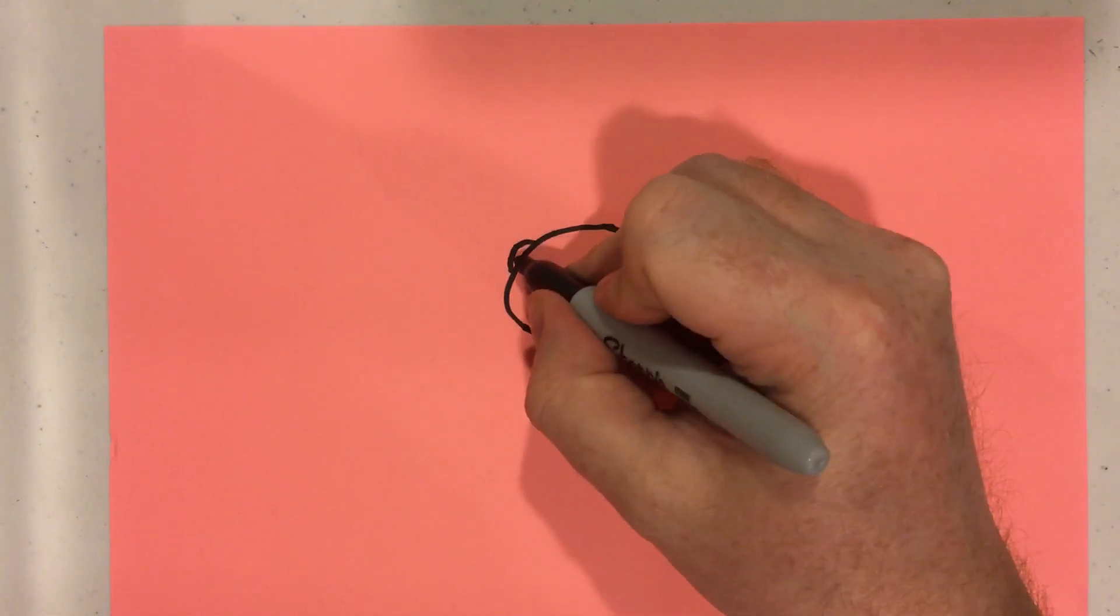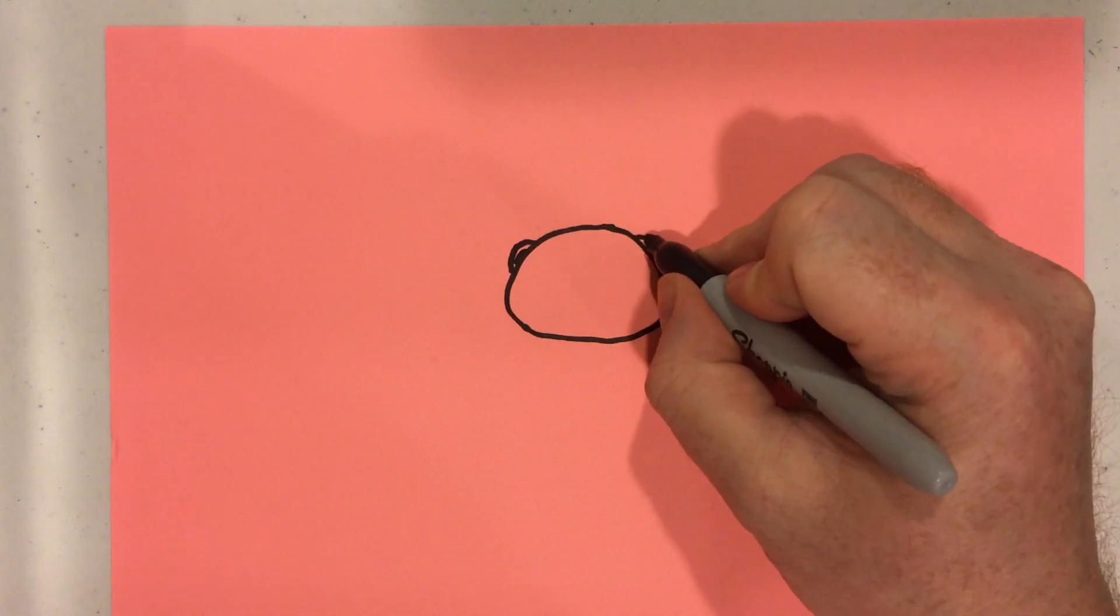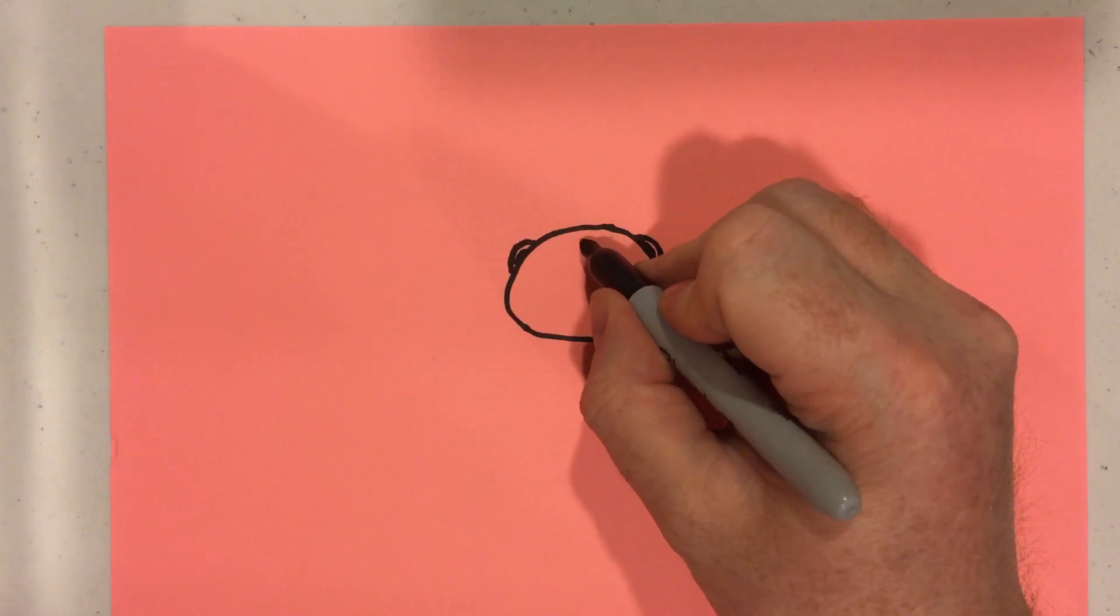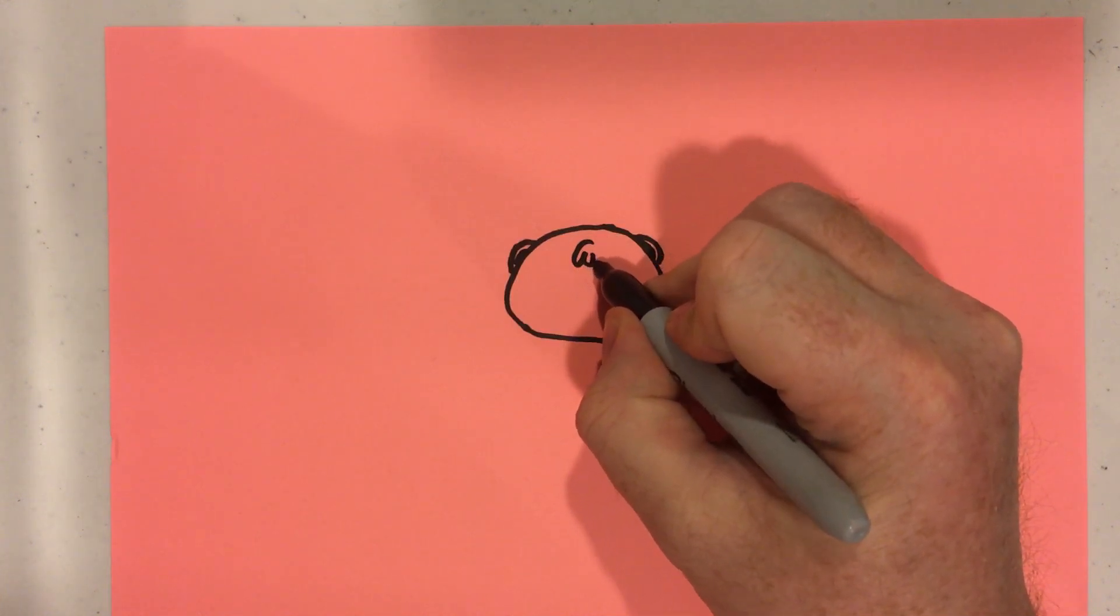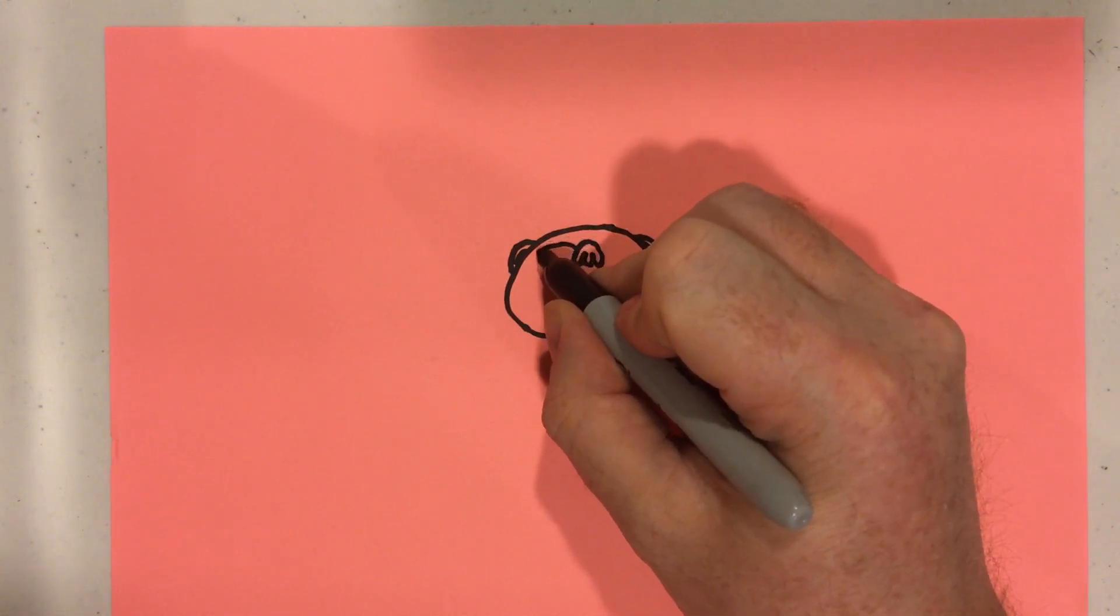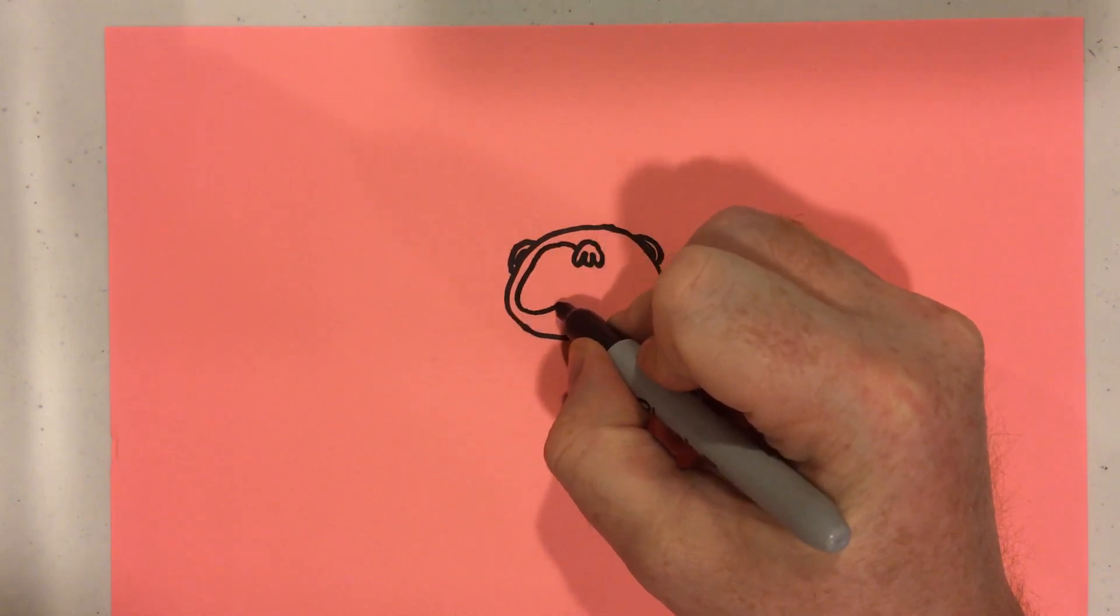We'll put some little ears on him, then we're going to draw a little nose. And he's got, like a raccoon, a big face mask kind of shape.